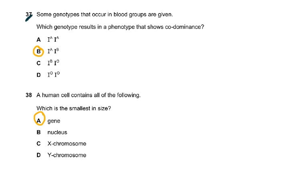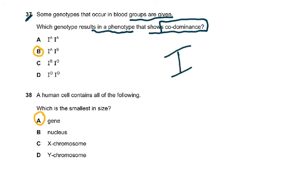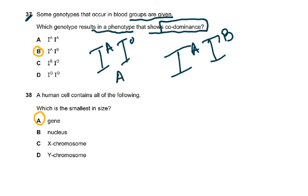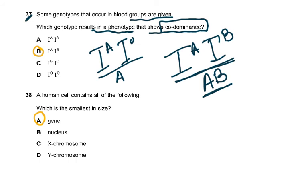Question 37: Some genotypes that occur in blood groups are given — which genotype results in a phenotype that shows co-dominance? Co-dominance means both alleles show their effects. That is only I^A and I^B (blood group AB). If it were I^A and I^O, the blood group would be A — not co-dominance. But I^A I^B gives blood group AB, so both alleles show their effect. That is co-dominance, and it is also heterozygous.